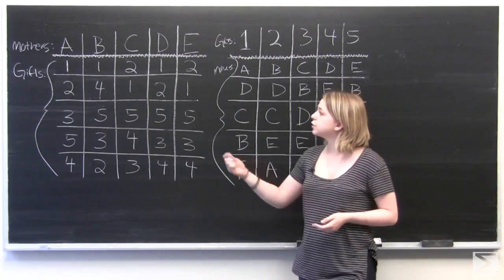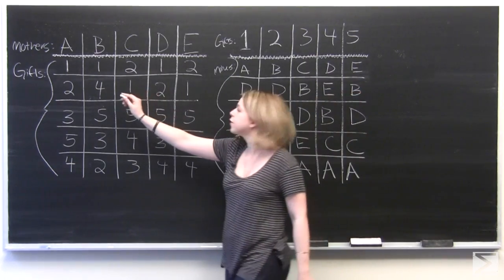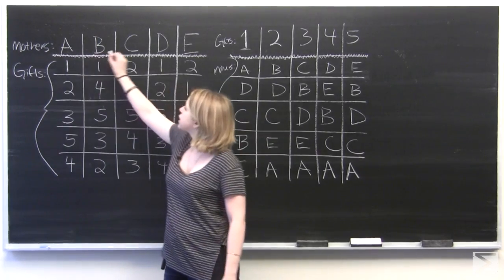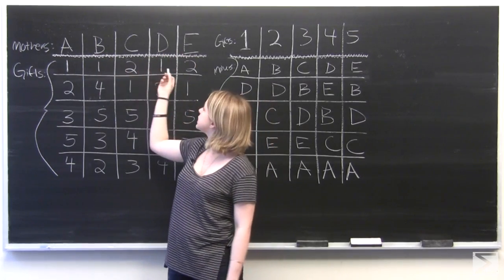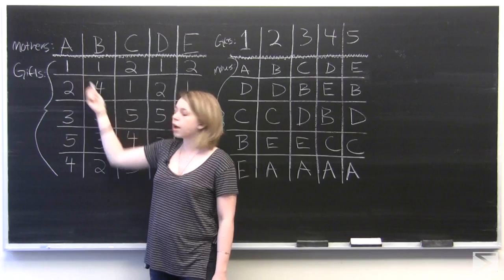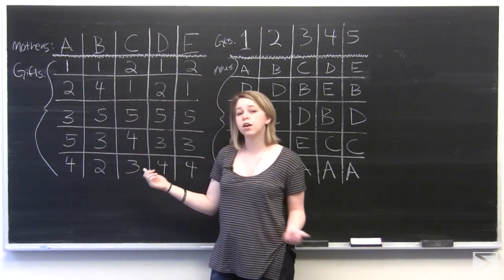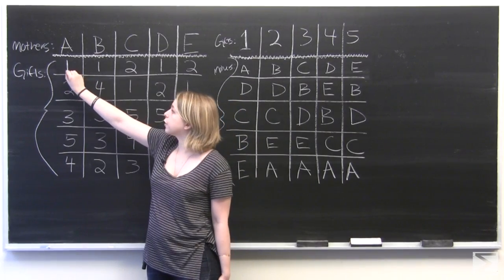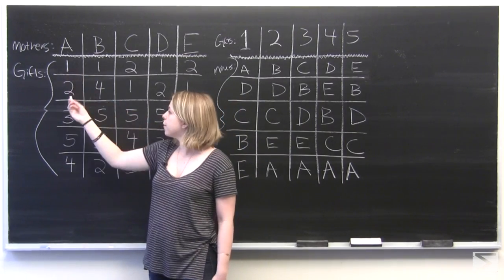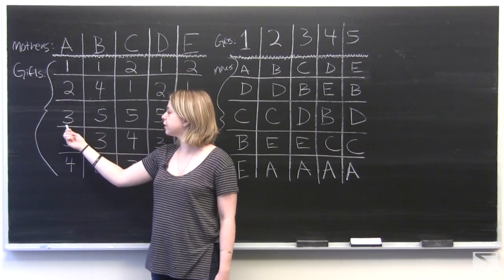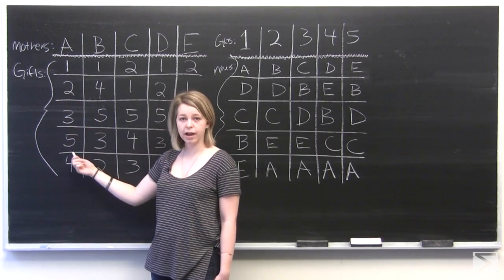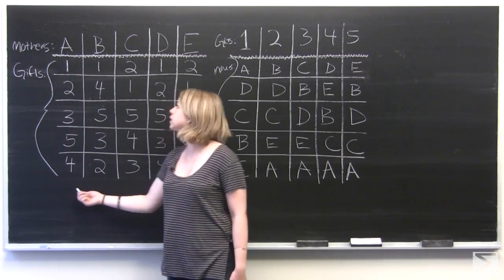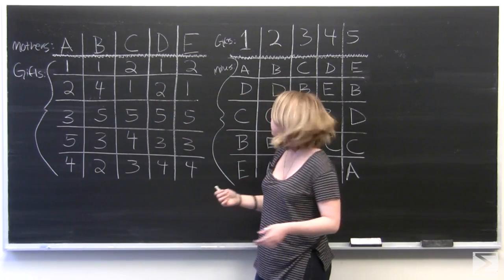So over on this board, we've got two different charts. In this chart, we've got our five possible mothers at the top: A, B, C, D, and E. And all of the mothers can see all five possible gifts and so they rank them. Mother A would prefer gift number one, but she'd take gift number two, then gift number three, then gift number five, then gift number four afterwards. And the rest of the mothers have ranked their preferences as well.